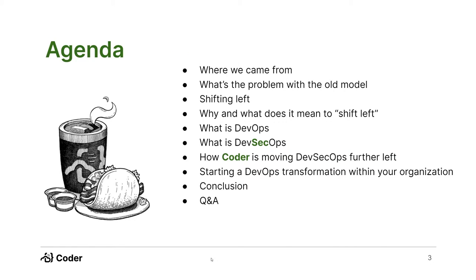For a brief overview of our agenda: I want to talk about DevSecOps and paint the picture of where we came from — what software development looked like before the DevOps and DevSecOps movement, how that process changed, and what Coder has been doing to help continue to improve that process.